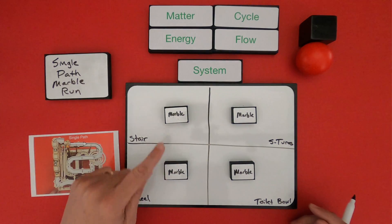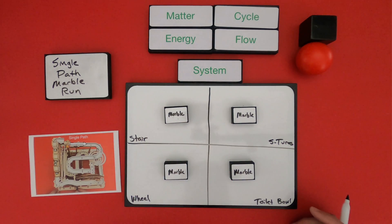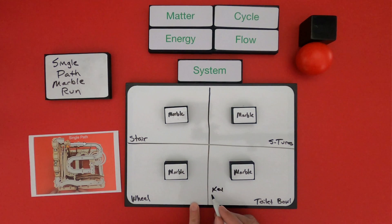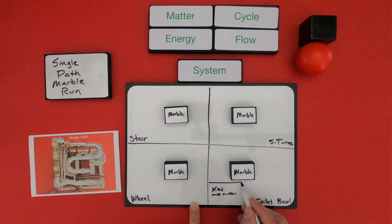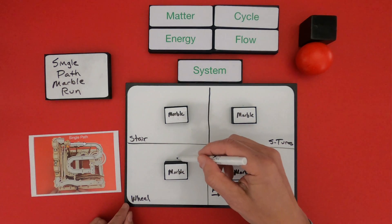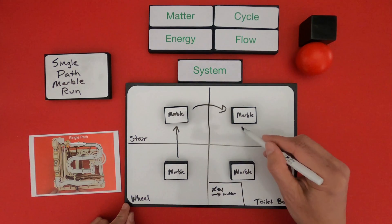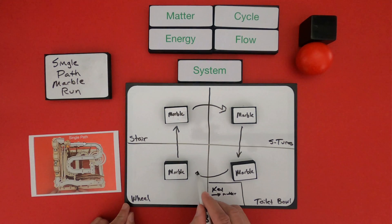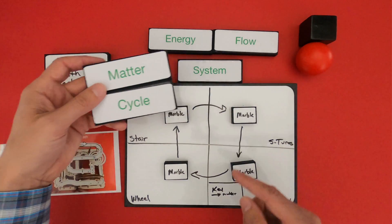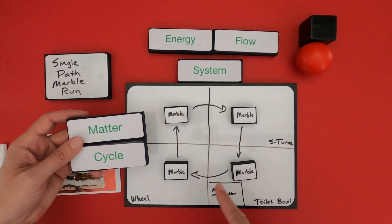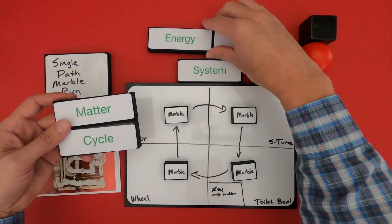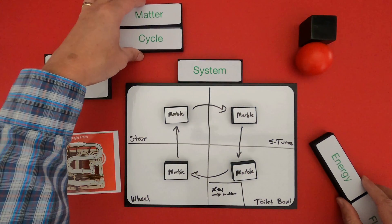As we look at the matter, the marbles are actually moving around and were found in all four features. Next I want to write down a key — a key is important when modeling. The arrow represents matter moving. The marble from the wheel is lifted to the stairs, then eventually goes to the S-turns, then down the toilet bowl, and eventually back into the wheel again. What I'm really showing on my model is that matter cycles — it's the same marbles going around and around. We would call this matter cycling.